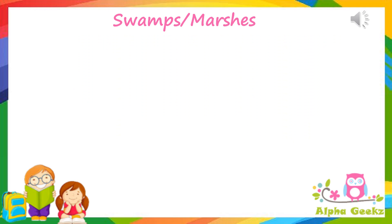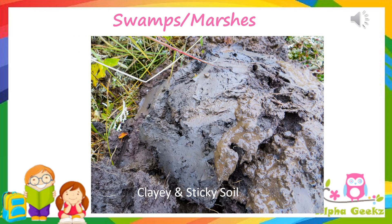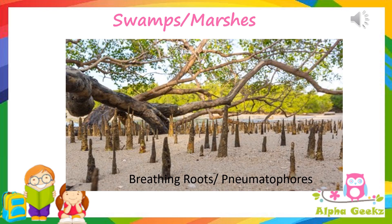Marshes have clay soil with plenty of water. The soil is sticky and does not have enough air for the roots of the plants to breathe. To withstand these problems, the trees growing in marshy areas have roots growing out of the water-logged soil to breathe air, alongside normal underground roots. Such roots are called breathing roots or pneumatophores.